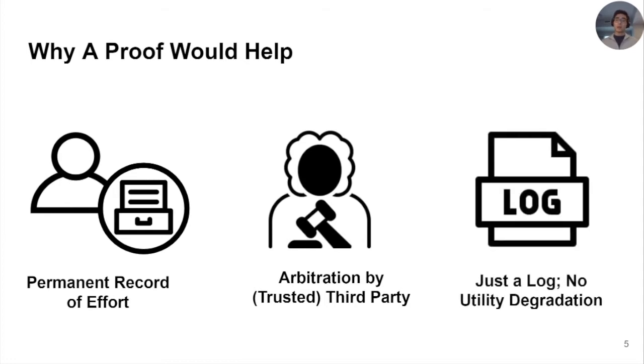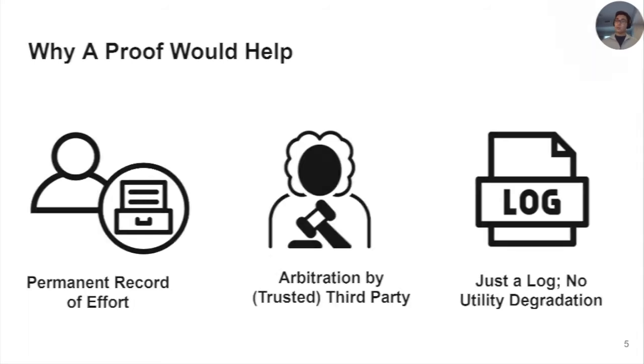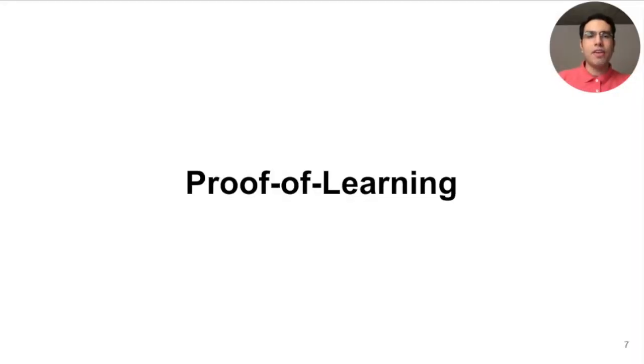Finally, and tied back to the challenges with prior work, a proof can be boiled down to just a form of logging, which means that there are no changes to already complex training procedures outside of adding those logs. Thus, there is also no trade-off between the proof success with model utility. Hello, I'm Mohamed Yagini, and I will be presenting our main contribution to the proof of learning.